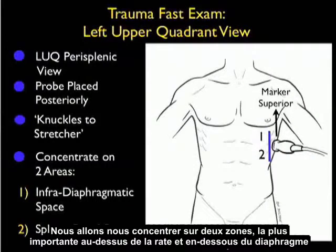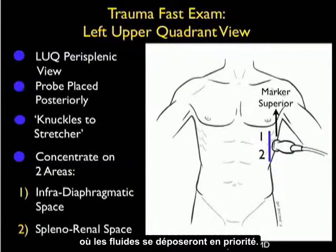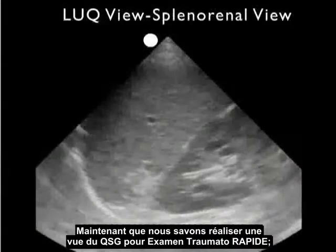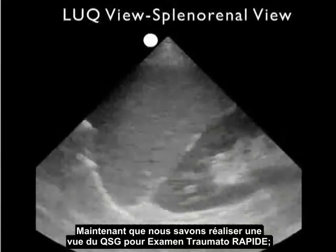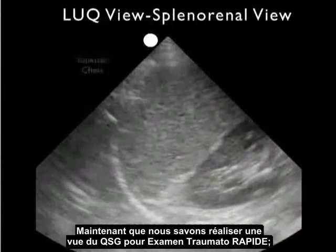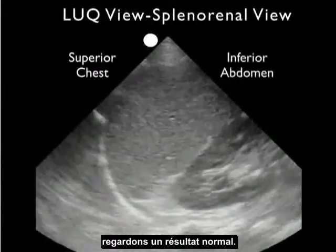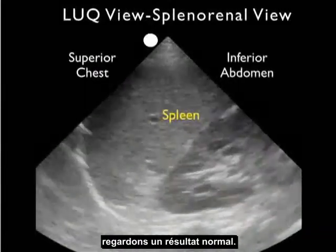We'll concentrate on two areas: most importantly, the area above the spleen and below the diaphragm where fluid will preferentially accumulate, but rounding out our exam we'll look inferior at that splenorenal space. Now let's take a look at a normal ultrasound image.